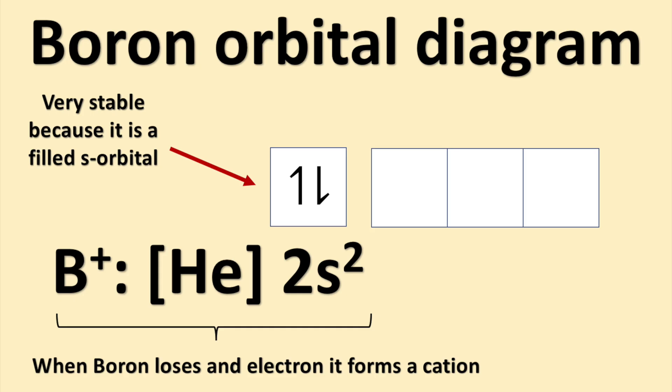Also, if boron was to lose an electron, it would have a completely filled s orbital, which is more stable than a partially filled orbital. The electron configuration for boron, if we were to remove an electron, would be helium 2s2, making it a boron cation, which would be denoted as B+.